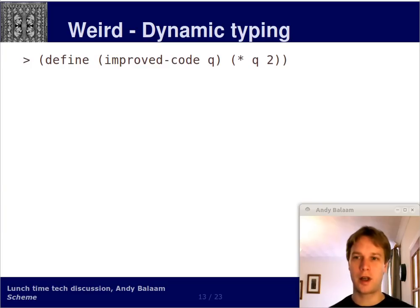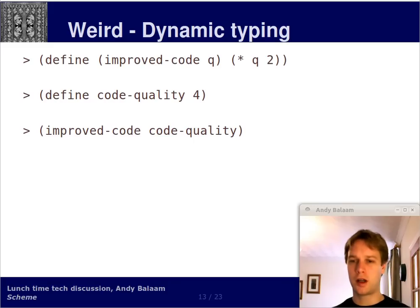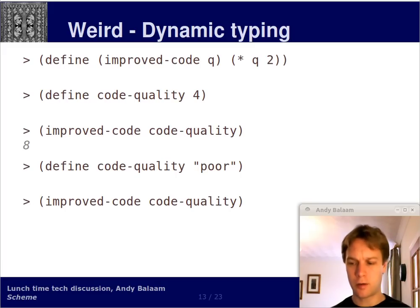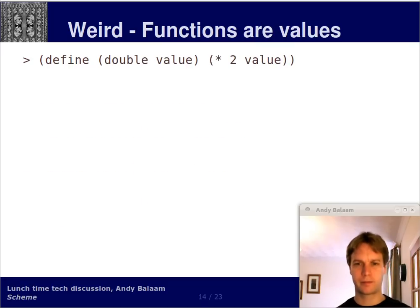Okay, other things that are weird. Types are completely dynamic, and I don't have to tell you this, because you know about this, because you've done JavaScript. But anyway, imagine that we define a function called improved code, which takes in a value q, and multiplies it by 2, and returns the answer. So if we define code quality to be 4, and then we pass our code quality to the improved code function, we get back the answer 8. Now imagine that we define code quality to be poor. Well, we can still pass it to that function. No one's going to object to us until we try and run it. And when we try and run it, it fails. So you're used to that. Dynamic typing is not weird anymore, right?